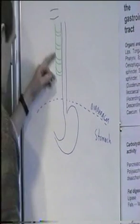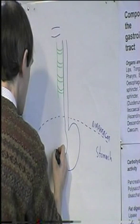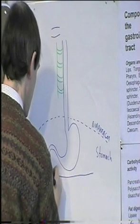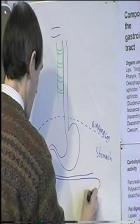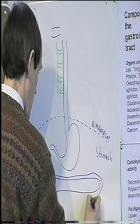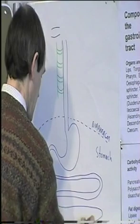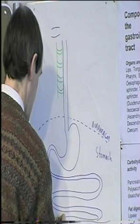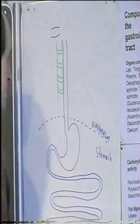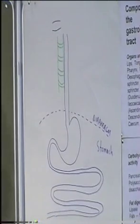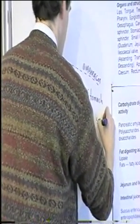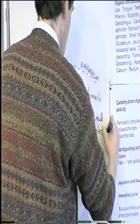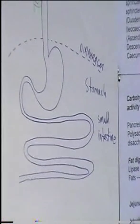The food enters the small intestine, which is quite long and folds around in the abdominal cavity. So the stomach, then the small intestine.